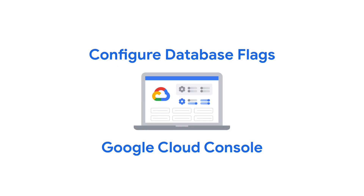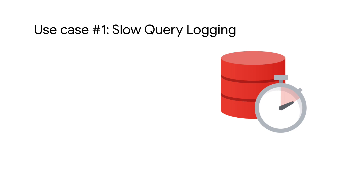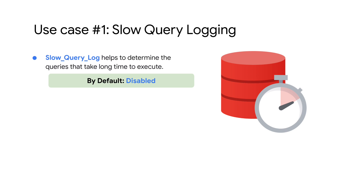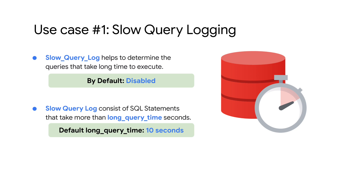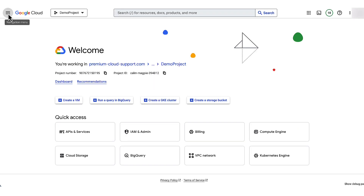Remember, database flags cannot be configured using the MySQL client. Today I will show how to configure database flags for a MySQL instance using Google Cloud Console. Let's get started by looking at an example use case: slow query logging. The MySQL slow query log can be used to find queries that take a long time to execute. By default it is disabled to save storage, but you can enable it when you need to find slow queries. It logs SQL statements that take more than long_query_time seconds, which is 10 seconds by default.